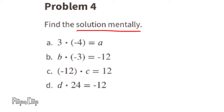Problem number 4: find the solution mentally. Part a: 3 times negative 4 equals A. Since a positive times a negative equals a negative, and 3 times 4 is 12, then A must equal negative 12.